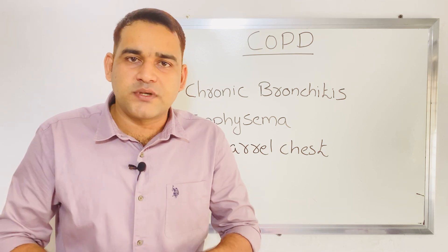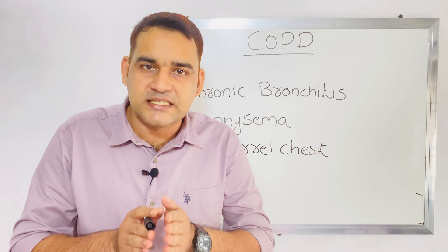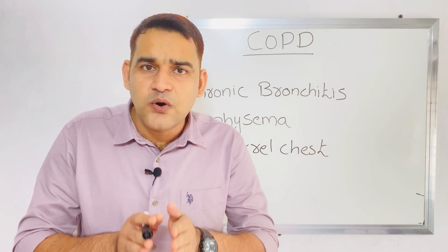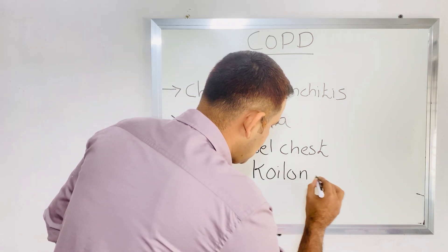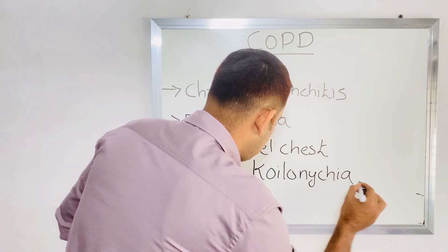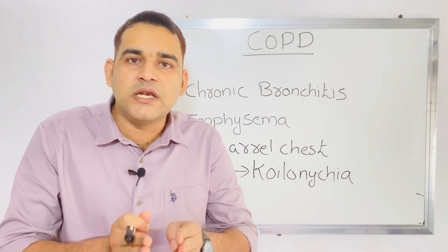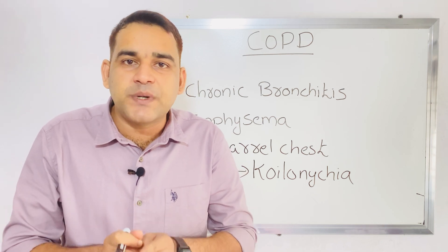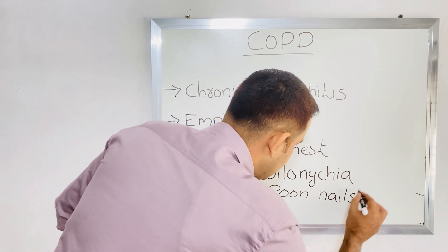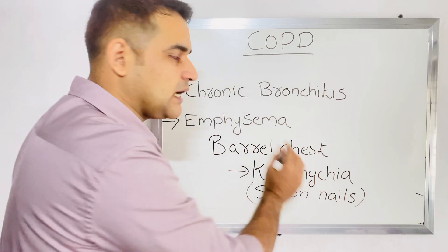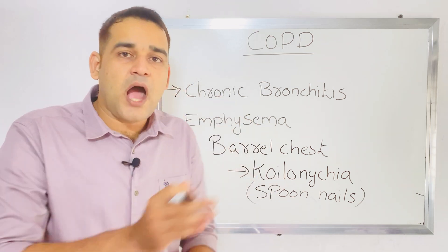In any hypoxia case — including COPD — for long-term hypoxia, you can see koilonychia. Koilonychia means spoon-shaped nails. This is very important for your exam: any hypoxia case including COPD, for long term, you can see koilonychia.